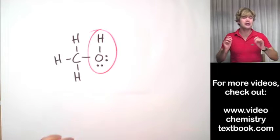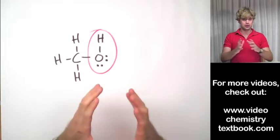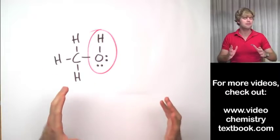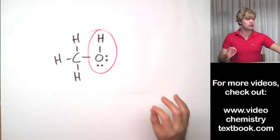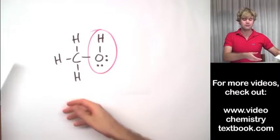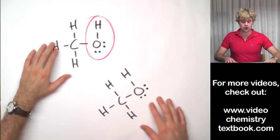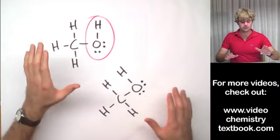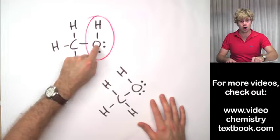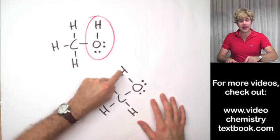Hydrogen bonds are intermolecular attractions which mean that they happen between molecules. So in order to show a hydrogen bond what we'd have to do is get another molecule and show an attraction like this and the attraction, the hydrogen bond is going to happen between this O here and this H here.